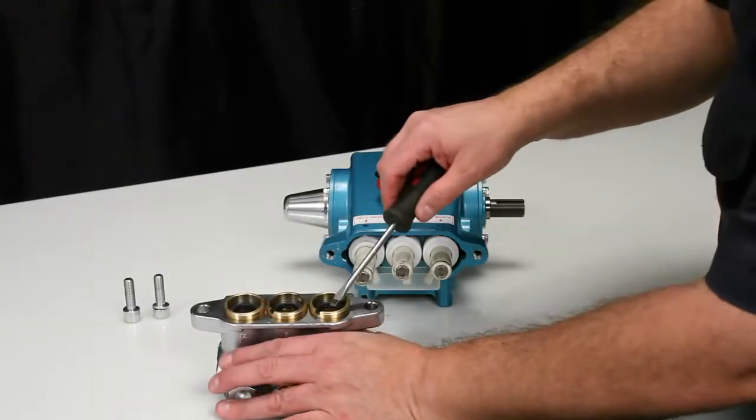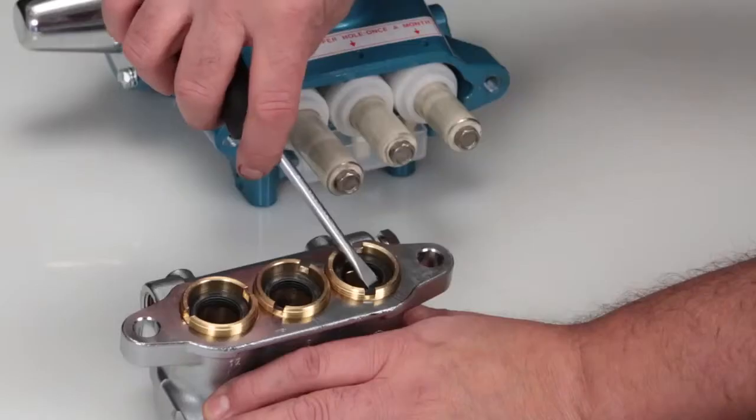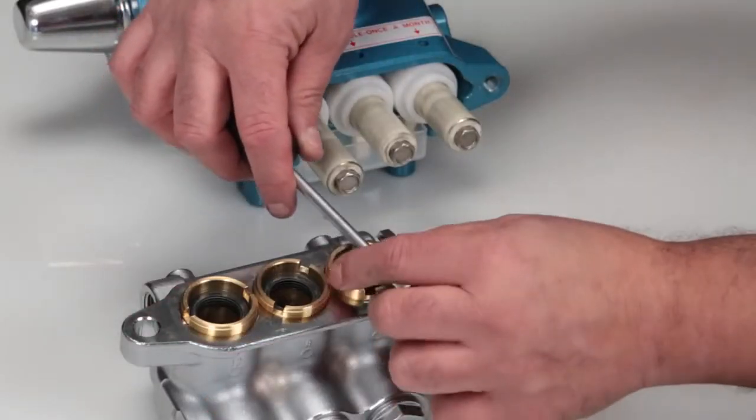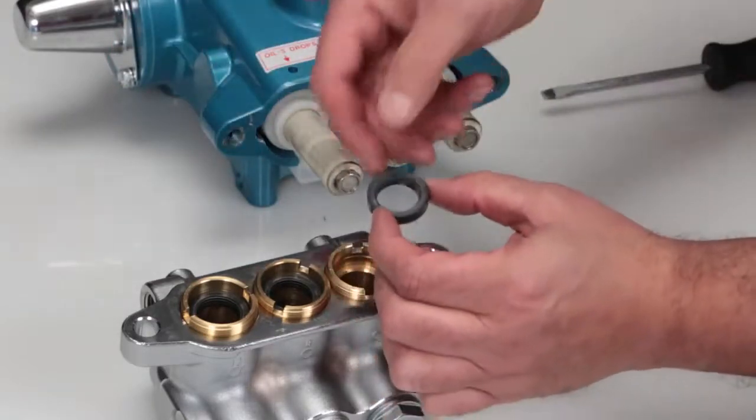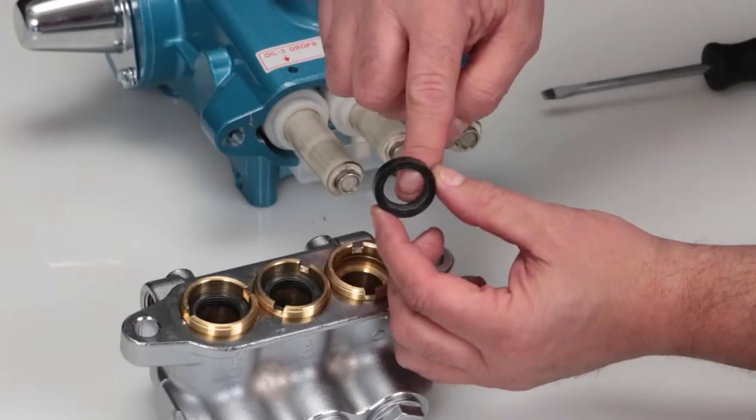Place a flat tip screwdriver under the low pressure seal and pry upward to remove. Be careful not to scratch the inner diameter surface of the seal case where the low pressure seals are located. Inspect the inside of the low pressure seal for wear or damage.